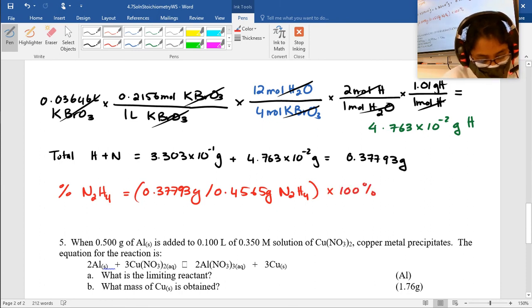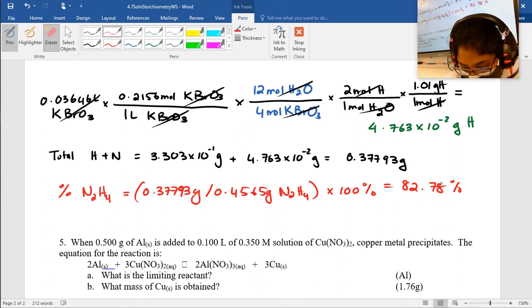That will give me 0.8278 times 100. I could just times it by 100 right now. Why don't I just do that on my calculator? Let's go. I'll get 82.78 percent. Or if you got 82.79, I think I can round back to 82.79 percent. There we go.